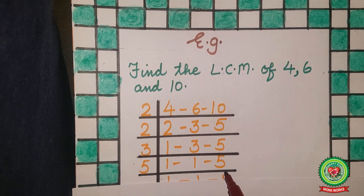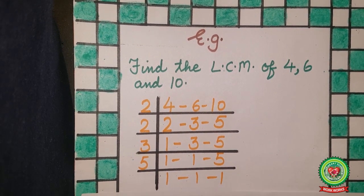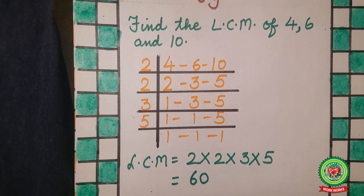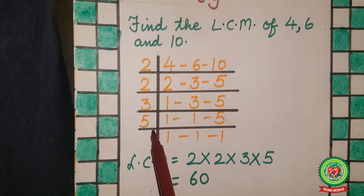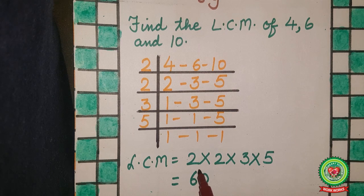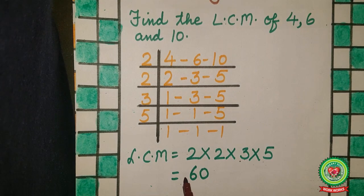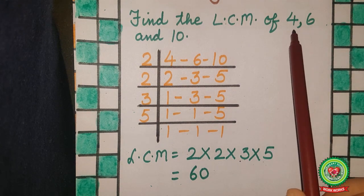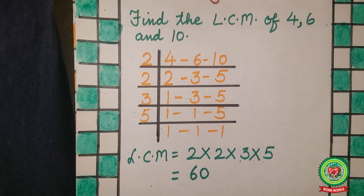5 is a prime number, so divide 5 by 5. After dividing 5 by 5 we get 1, since on the 5 times table, 5 comes at 1. That means LCM equals 2 × 2 × 2 × 3 × 5. Multiplying: 2 × 2 = 4, 4 × 3 = 12, 12 × 5 = 60. So 60 is the LCM of 4, 6, and 10.